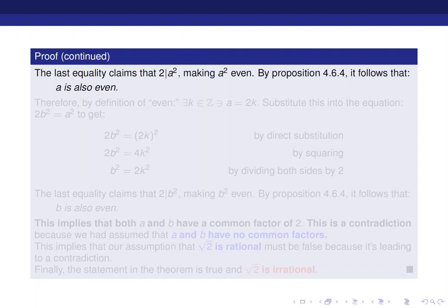Well, by the theorem or the proposition 4.6.4, it will follow that a is also even. But if a is even, then a is going to be equal to 2k. This is straight up by the definition of the word even, where k is an integer.